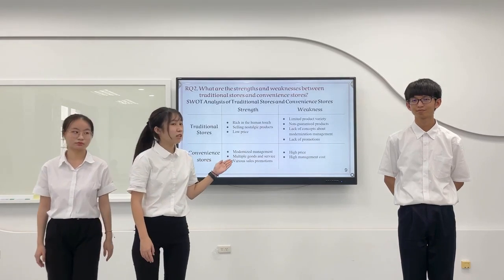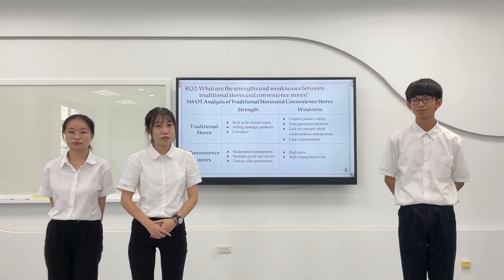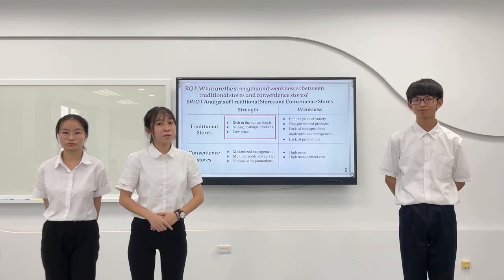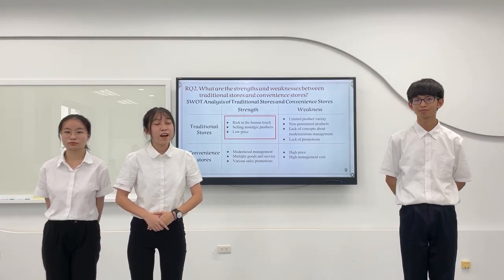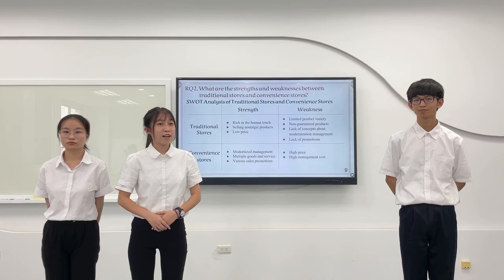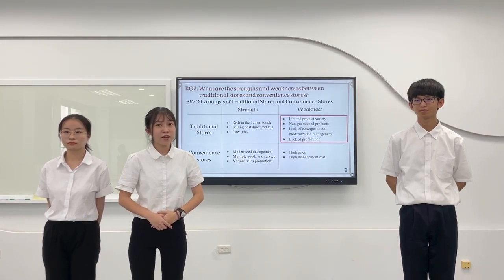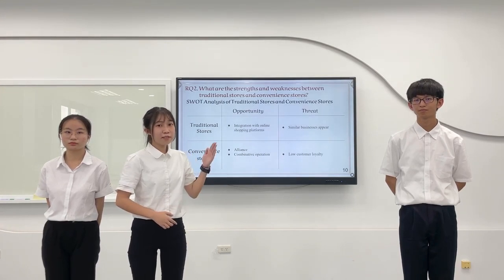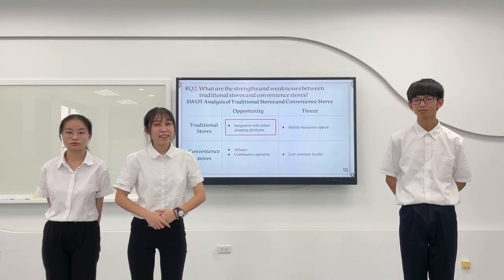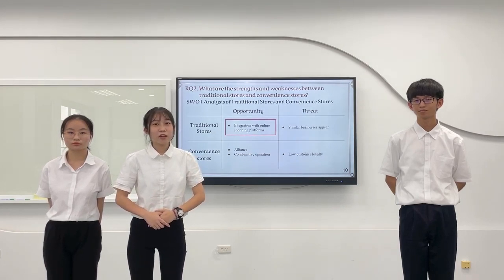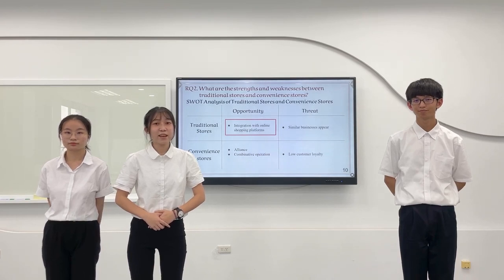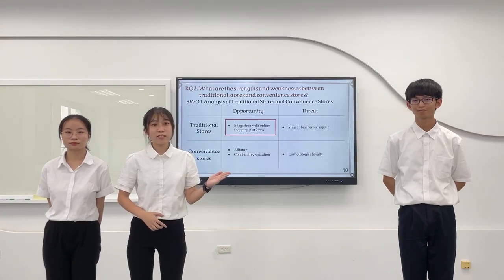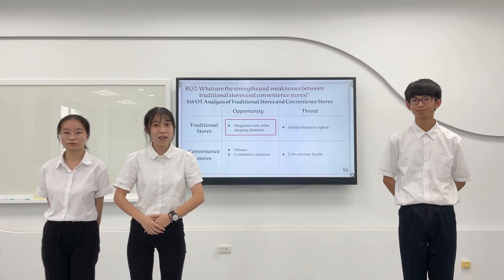This table is a comparative analysis of traditional stores and convenience stores. Based on the table, we found traditional stores have many unique strengths, such as a human touch and selling essential products. However, traditional stores are at a disadvantage in terms of product quality and diversity, and the owners also lack modern management concepts. As for opportunities, with the growing familiarity of online shopping, owners can develop diverse business channels and increase the visibility of goods online. In short, traditional store owners can use their strengths and opportunities to address their weaknesses.